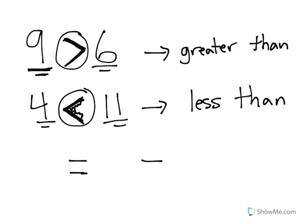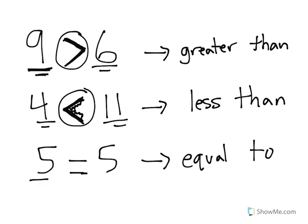The last sign that we have is a sign that you're very familiar with — it is the equal to symbol. So 5 is equal to 5. That means if I have $5 and you have $5, we have an equal amount of money. That's something that's very common and obviously you've worked with it before.